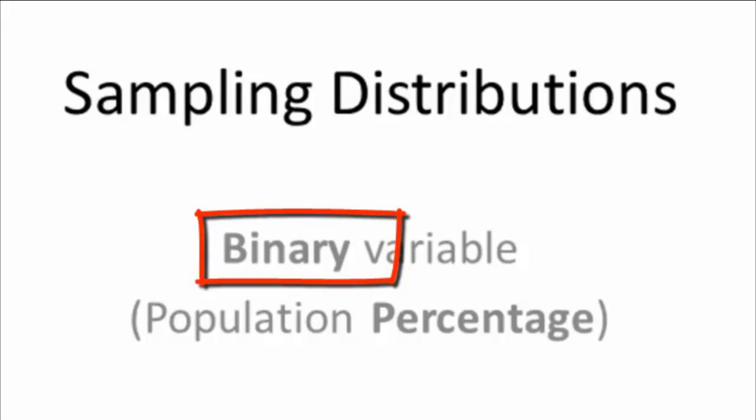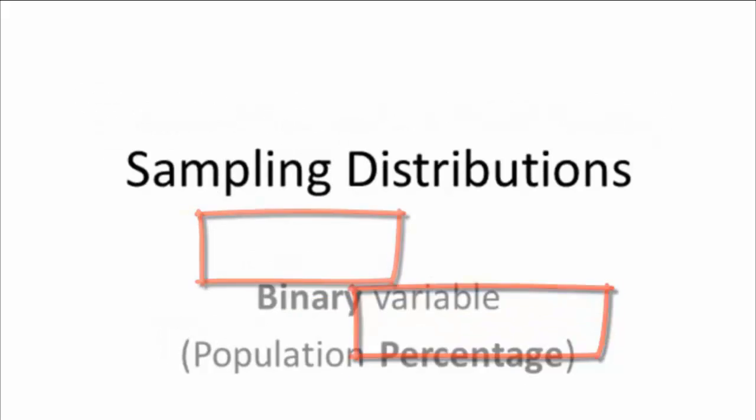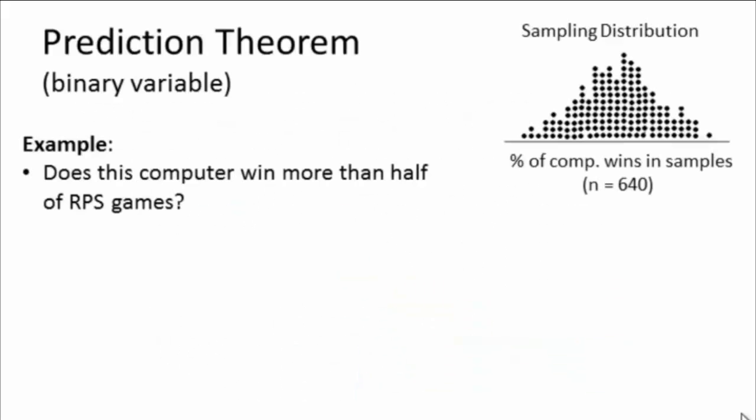Both binary and percentage are bold-faced because you're supposed to remember that anytime you have a binary variable, the thing you're interested in about the population is a percentage. In this particular example, we're using something we did in class and asking: does this computer program win more than half of its RPS games? We're going to imagine that the sample size in this case was n equals 640 games, so that would be games played by all the students as part of our sample.